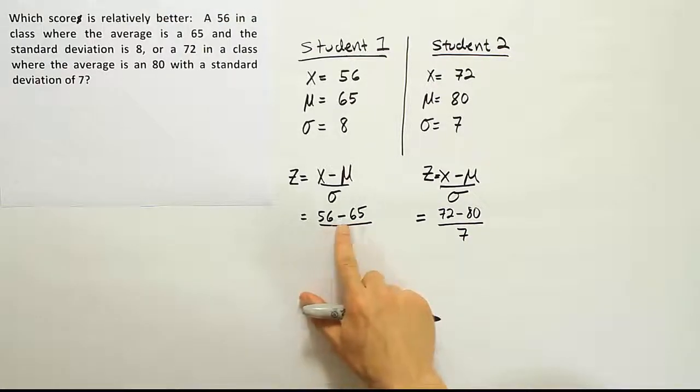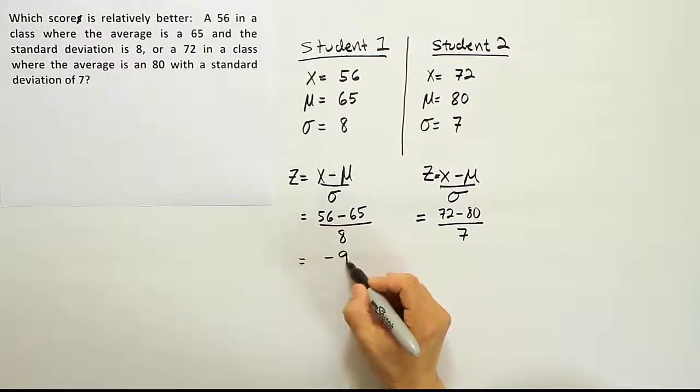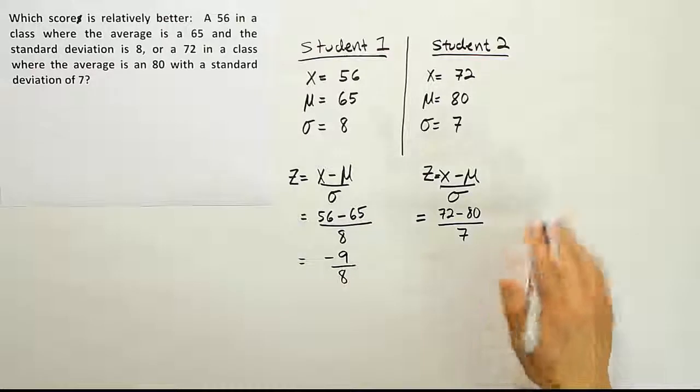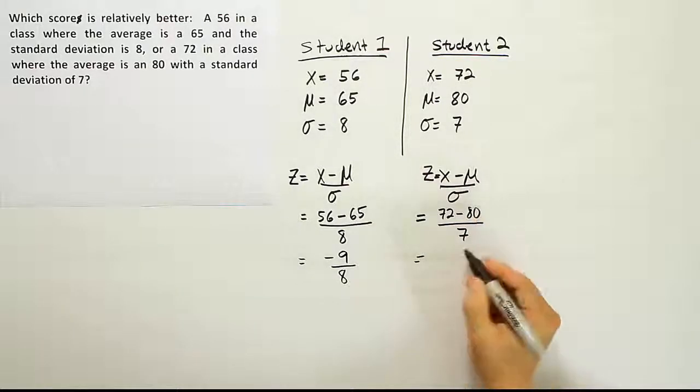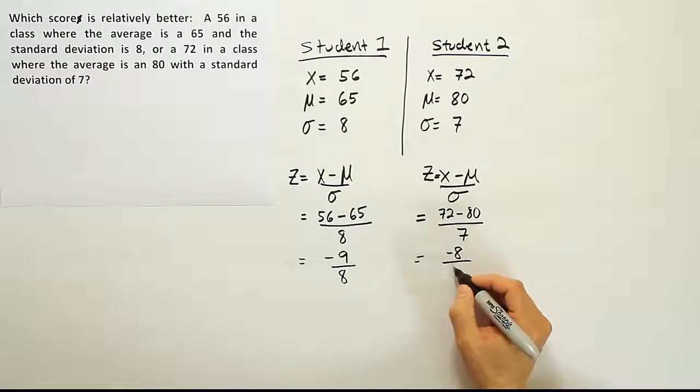Let's look at this student's difference here. This student was 9 points below average, so we end up with negative 9 divided by 8. And this student was negative 8 units below average, divided by 7.